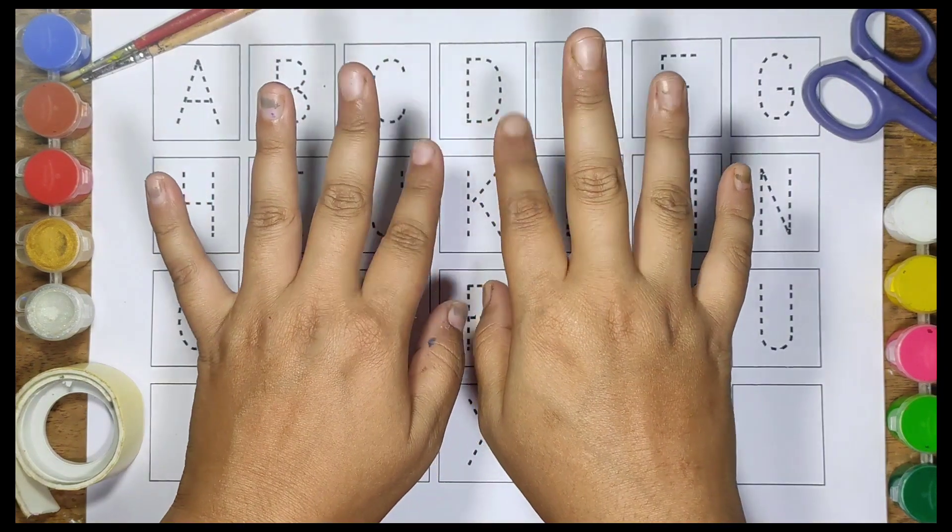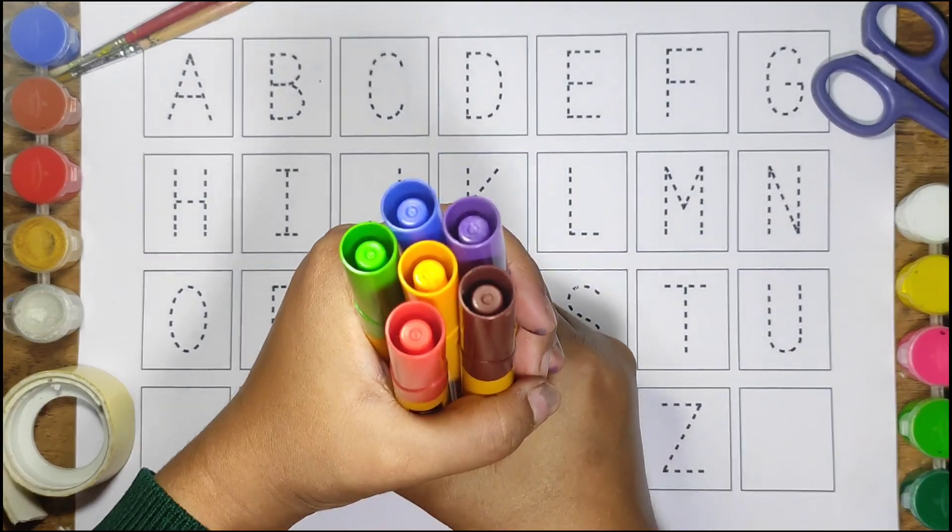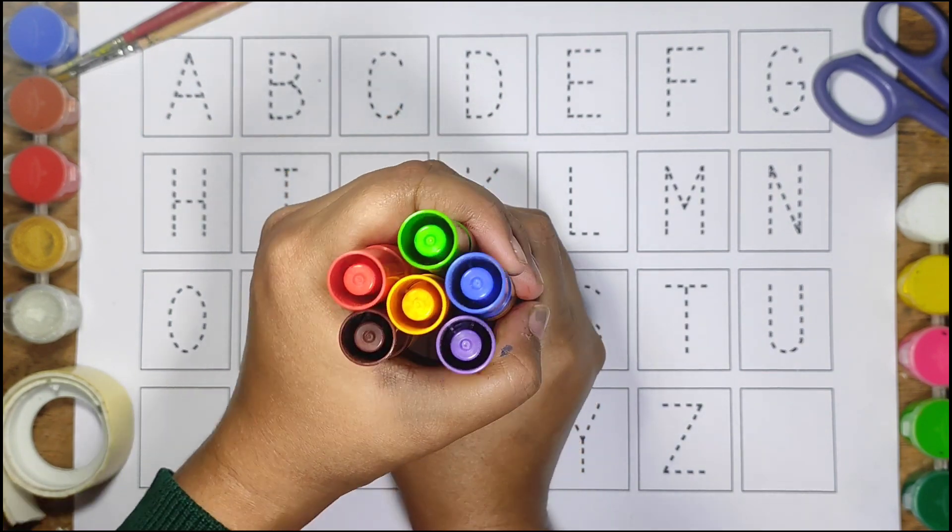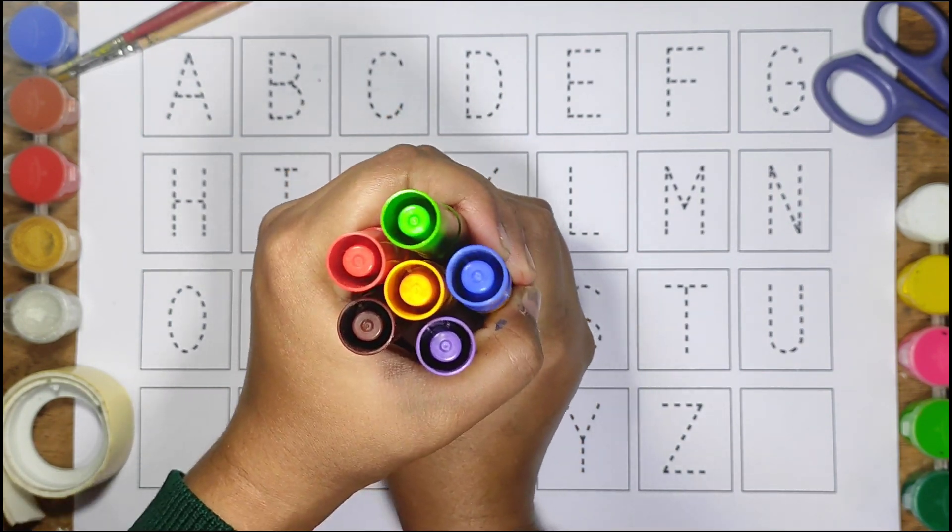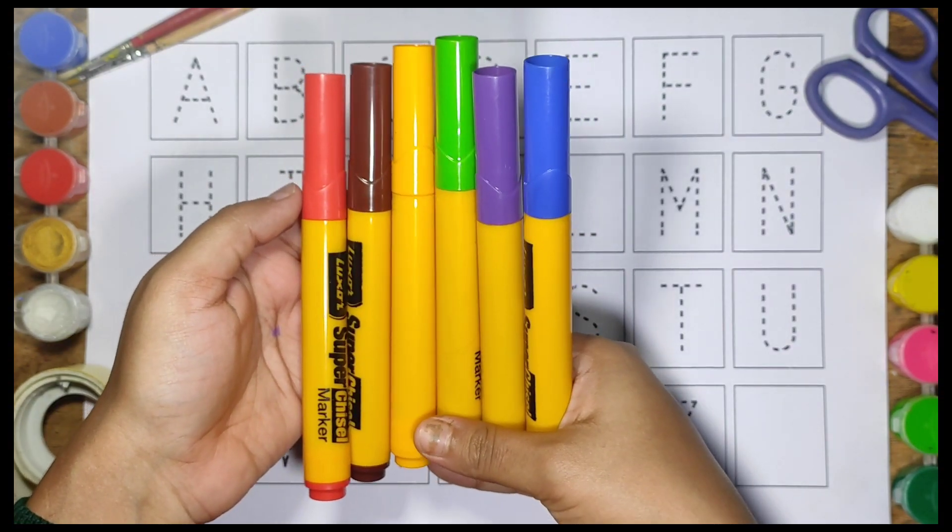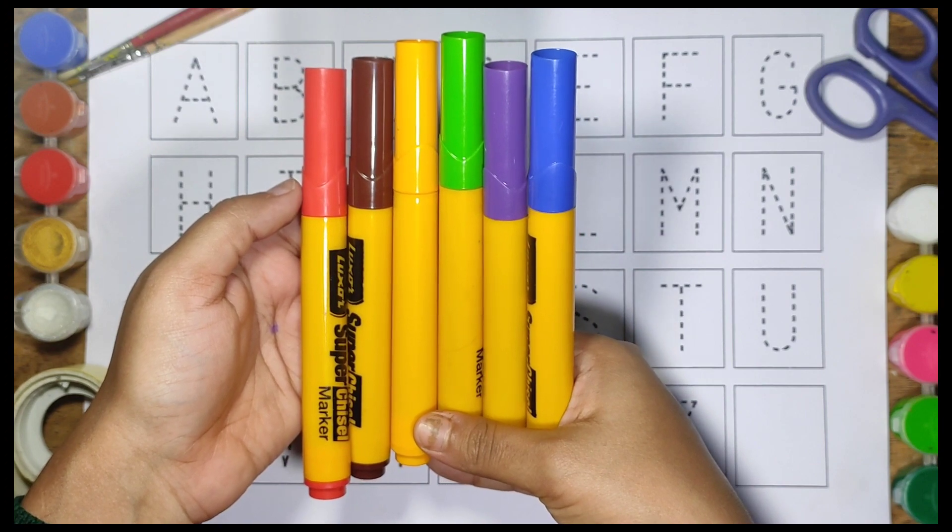Hello little cuties. Welcome to our channel Kitschai TV. Today we will trace A to Z set. So let's get started. We have six different colors: red, brown, orange, green, violet, and blue.